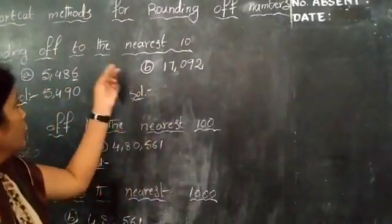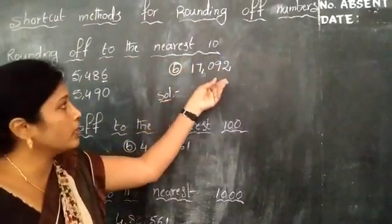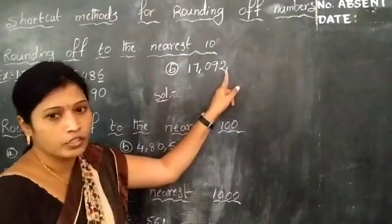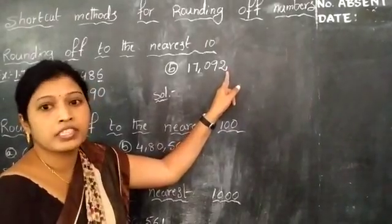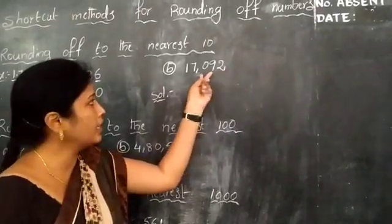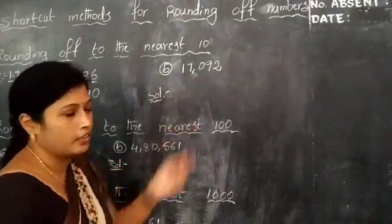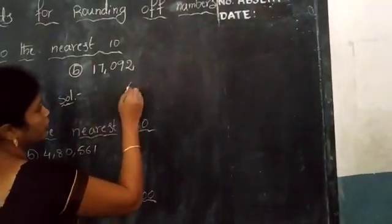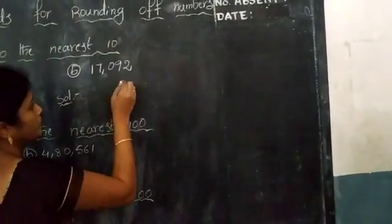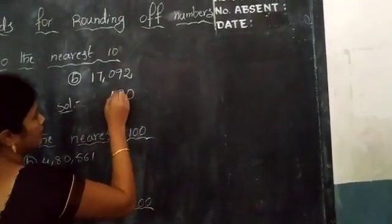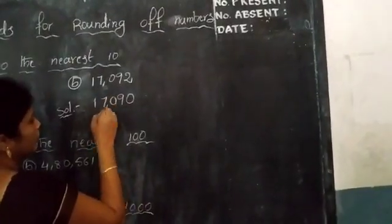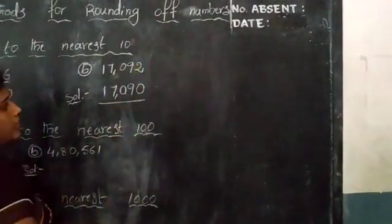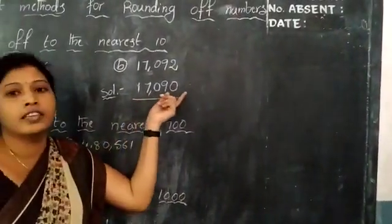For the second question, we are rounding to the nearest 10. So observe the 1's place. The digit is 2, which is less than 5. So the 1's place is replaced with 0 and the other digits are retained as they are. So the rounded number of 17092 is 17090.